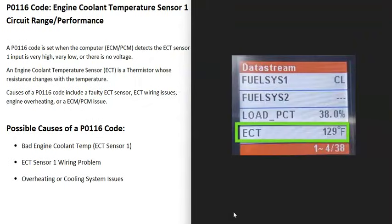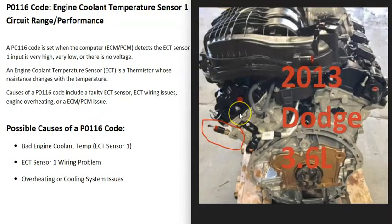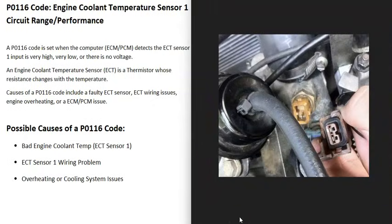An easier way is to use an OBD2 scan tool. Find the option for the ECT either in live data or data stream depending on the scan tool, and check what temperature that sensor is reporting. If it's way off, you know the sensor is bad. For example, if the engine is cold but the sensor is reporting something like 500 degrees Fahrenheit, you know there's a problem. So the first cause of a P0116 is that engine coolant temperature sensor number one has just gone bad and needs to be replaced.